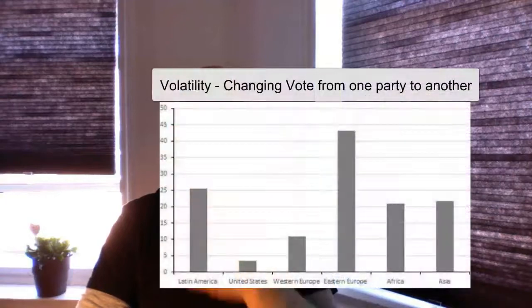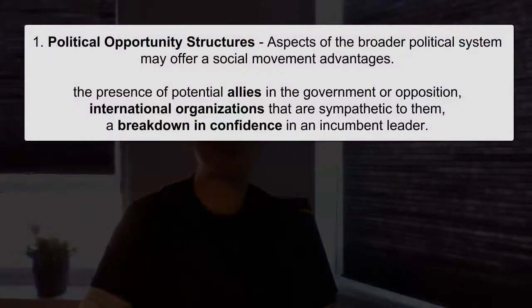The decline in trust and membership in political parties is reflected in voting volatility — more people are voting for new political parties in European countries. In the US, we can see different factions within the Republican and Democratic parties. How does a social movement succeed within a given political system? There are three answers. The first is political opportunity structures — aspects of the broader political system that may offer a social movement advantages.